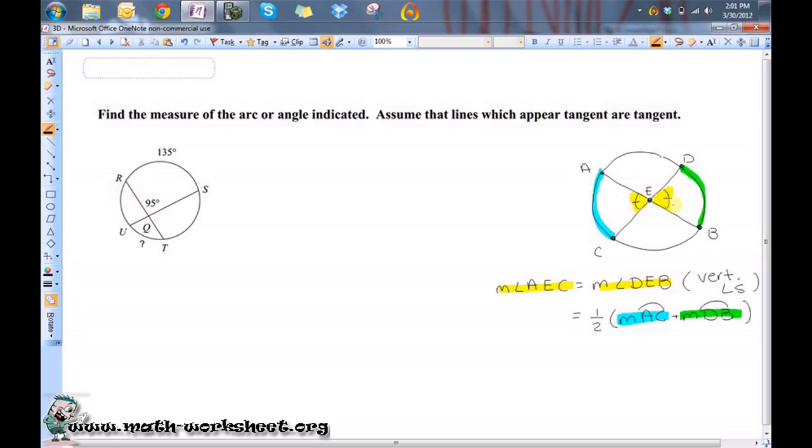So whenever you have vertical angles, they're equal in measure. I like to call this kind of like the bow tie effect, because it looks kind of like a little bow tie. So whatever the angles across from each other are, they're vertical, they're equal in measure.